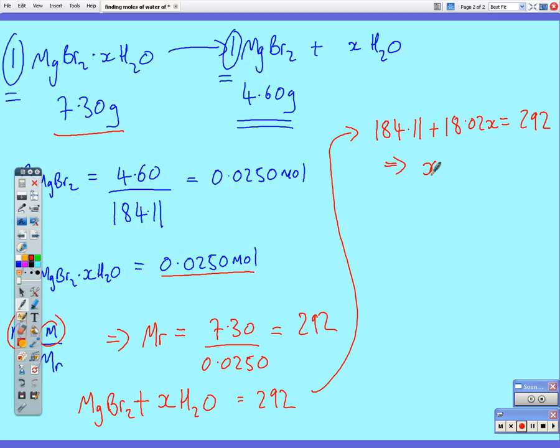That 184.11 plus 18.02x equals 292. If we solve that, we find that x is equal to 292, subtract 184.11 divided by 18.02, which is nearly 6. We get the same value.